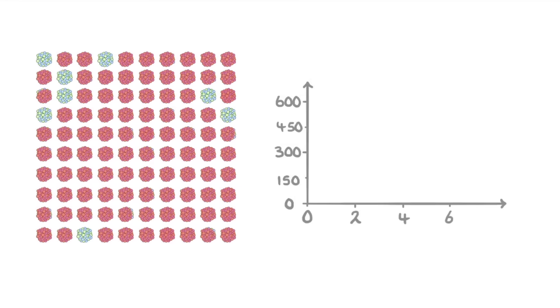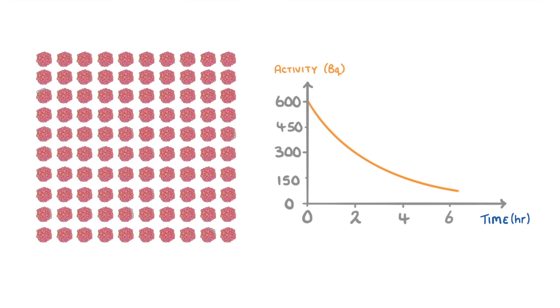Another way to show this decay process is by using a graph that plots activity in becquerels against time. As time goes on, the number of particles remaining and the activity of the sample will decline. But the rate of decline will also fall, which is why the graph is curved rather than a straight line.